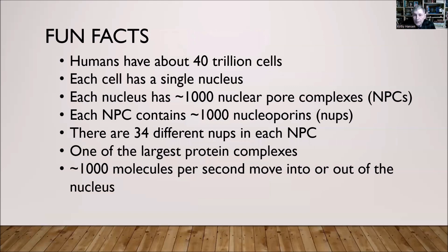Here are some interesting facts about the human nuclear pore complex. Humans have about 40 trillion cells. Each cell has a single nucleus having about 1,000 nuclear pore complexes, or NPCs. Thus your body has about 40 quadrillion of these nuclear pore complexes. Each nuclear pore complex contains about 1,000 protein subunits, or NUPs, with each NUP being a separate chain of amino acids. There are about 34 different protein NUPs in each NPC, meaning there are many copies of each NUP. NPCs are one of the largest known protein complexes. There are about 1,000 transfers of molecules in or out of each nucleus per second — these complexes are quite busy, and we could not exist without them.